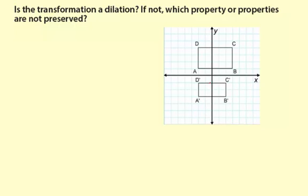Dilations preserve betweenness. And that means if there was a point, say, in between A and D that was labeled, it would be labeled as prime down here. But that looks fine the way it is.